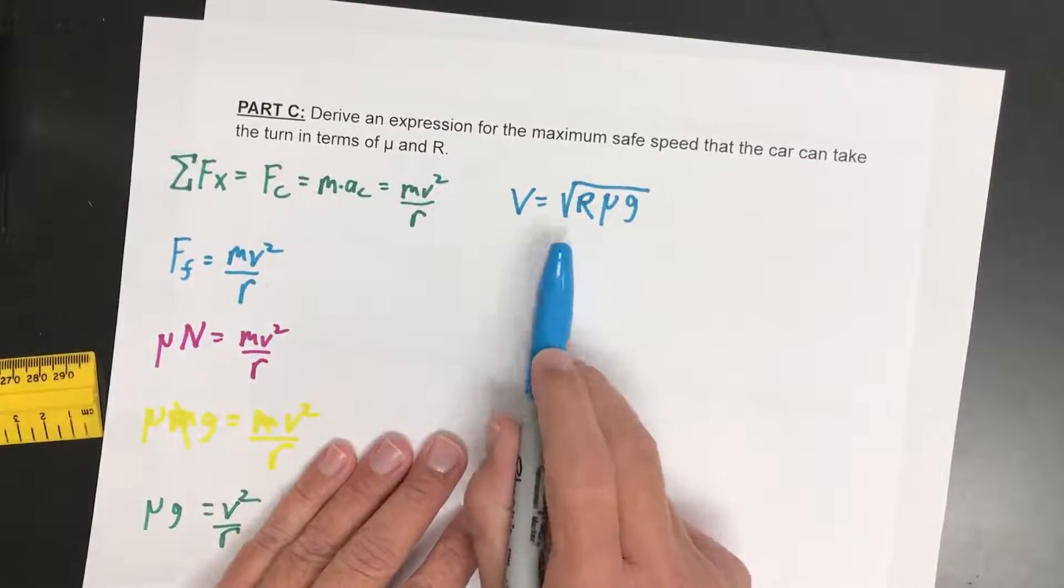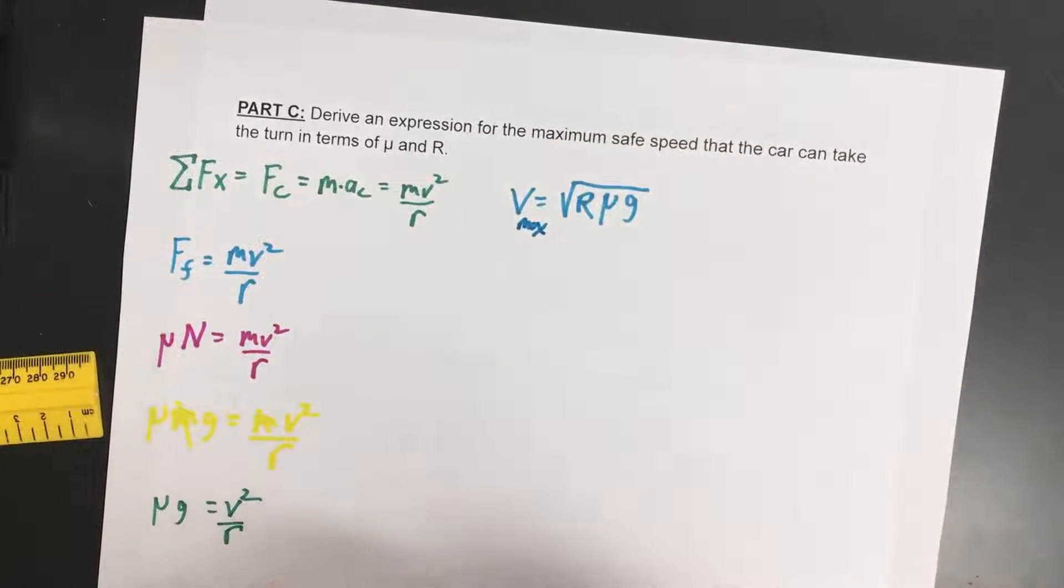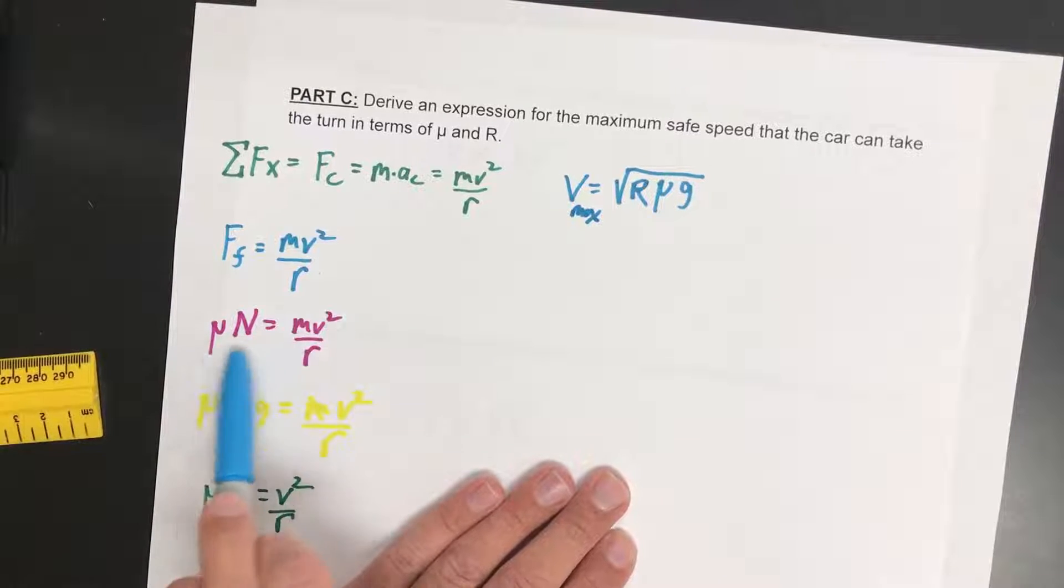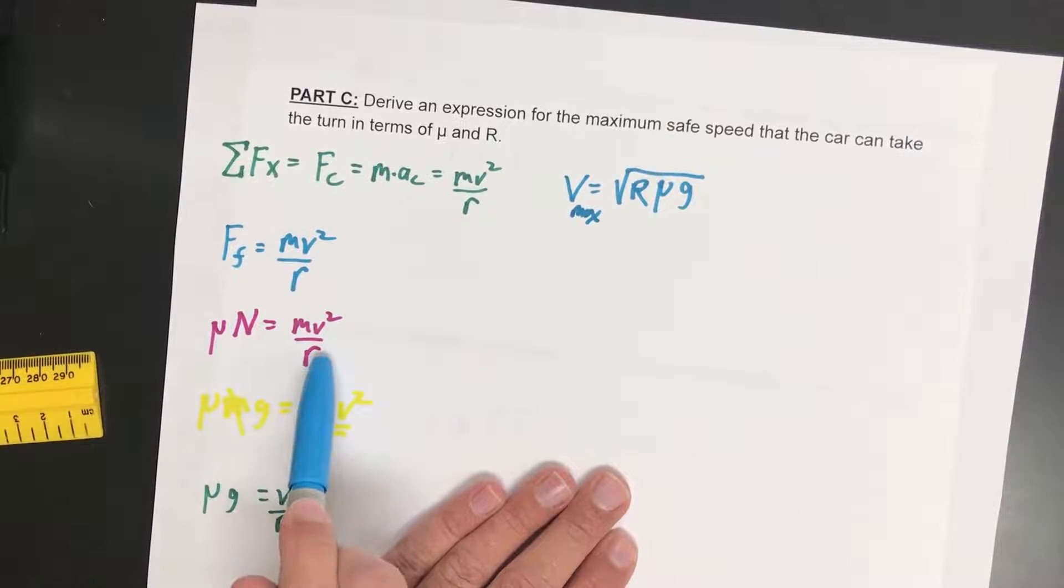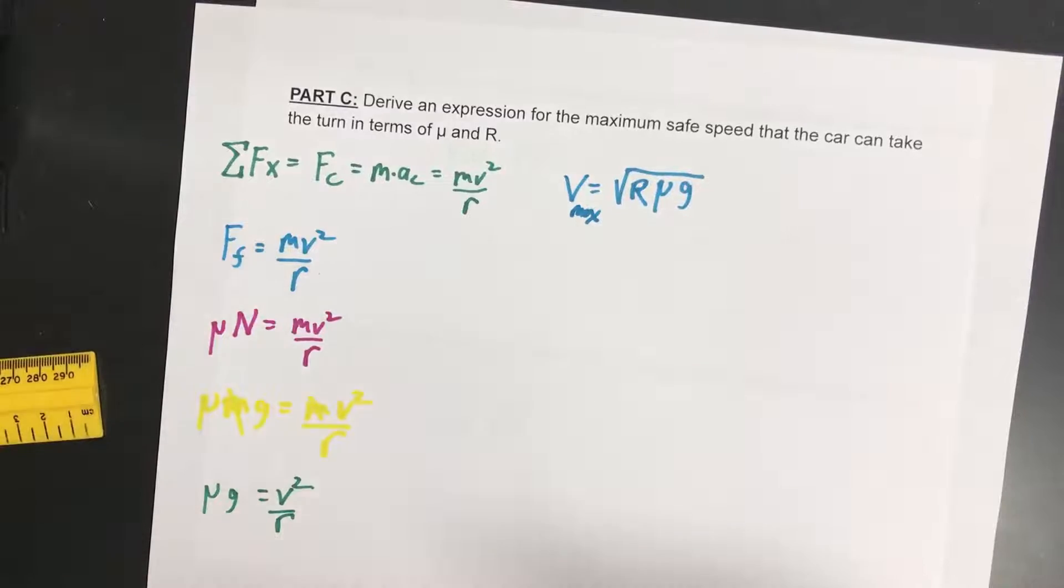But this is an equation, in case it comes up on a multiple choice, that you should memorize. And again, this is a maximum velocity because at that point, this side of the equation will get too big if that velocity passes that. And the friction will not be able to supply enough force in order to keep it going in a circle and it will slide out. So again, this is a maximum velocity.